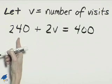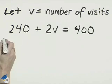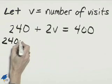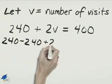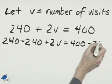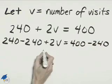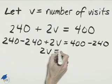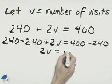Here we can subtract $240 from both sides. We'll have $240 minus $240 plus $2V equals $400 minus $240. We'll have $2V equals $160.